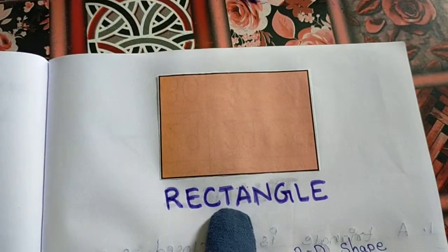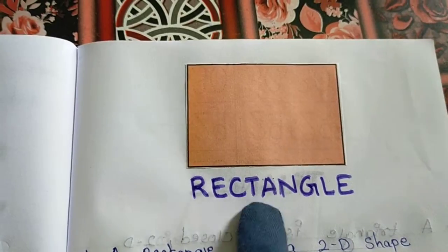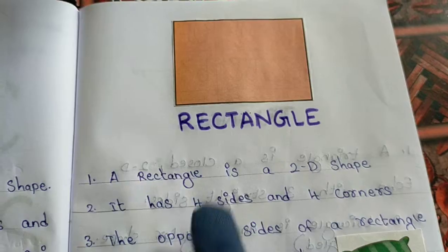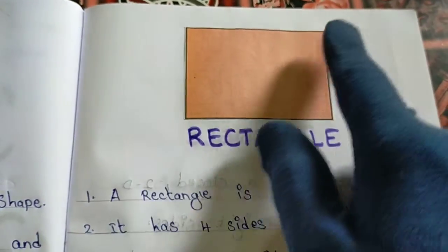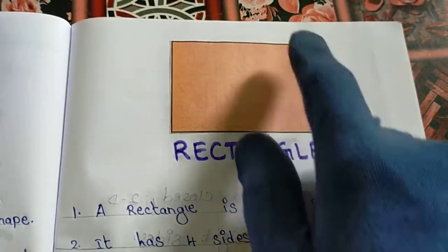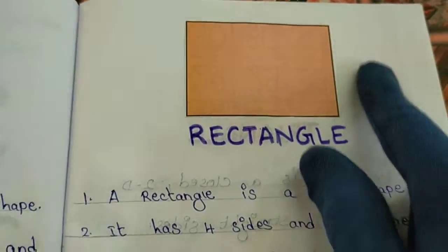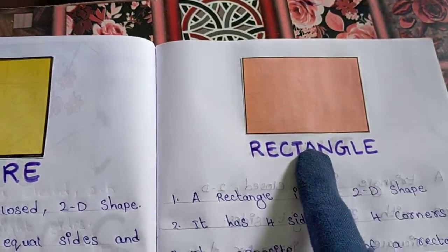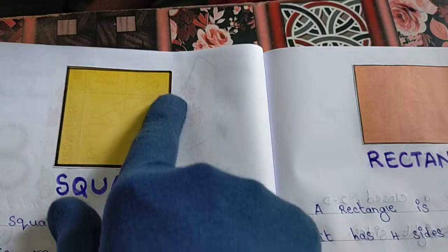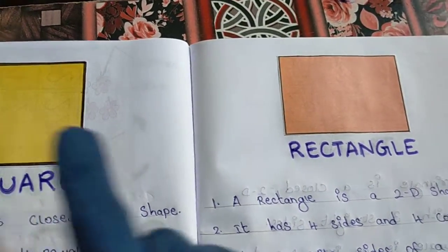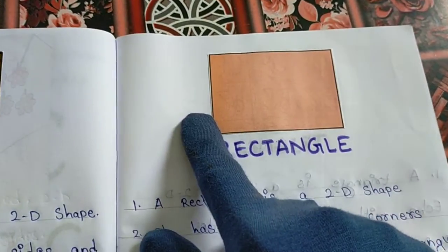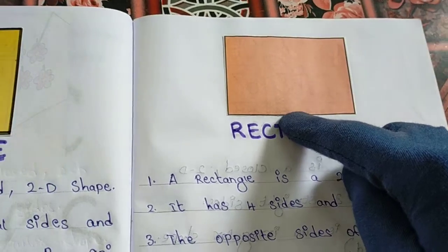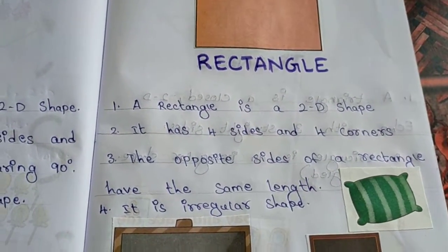Next shape — what is this? Rectangle! A rectangle is also a 2D shape and it has four sides. But what is the difference between a square and a rectangle? In a square, all four sides are equal. But in a rectangle, opposite sides are equal — this side equals this side, and this side equals this side. All four sides are not equal; opposite sides are equal.